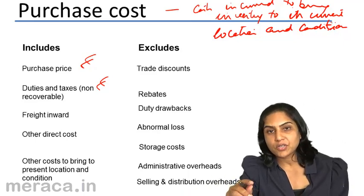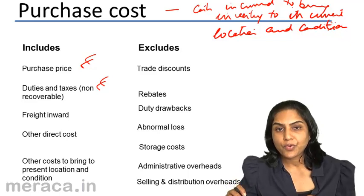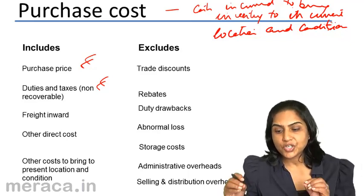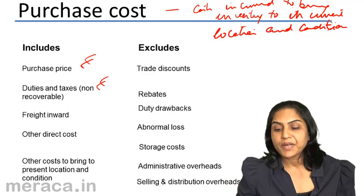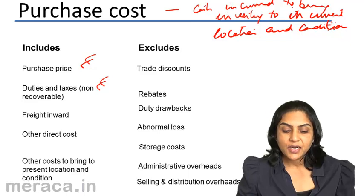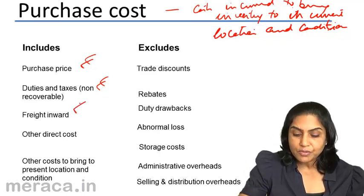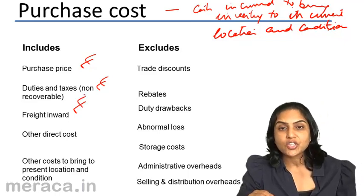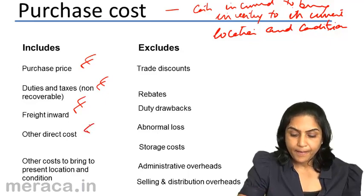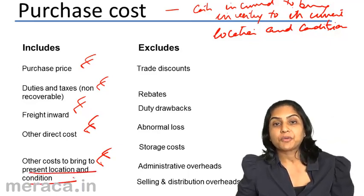All costs from when the item is bought right up to reaching of the stores, reaching of the godowns would be considered as purchase cost. Therefore, the purchase price, duties and taxes which are involved, any cost of transporting the goods and bringing them in, other direct costs, costs of unloading such material — all costs incurred to bring them to the present location and condition is a part of the purchase cost.